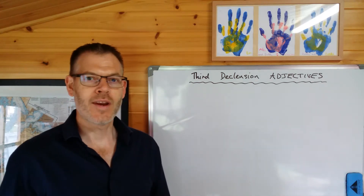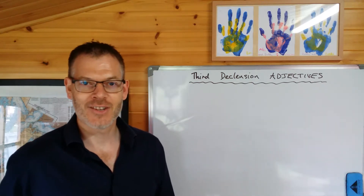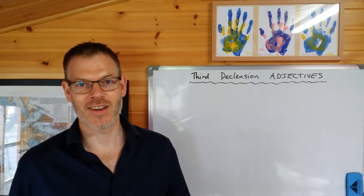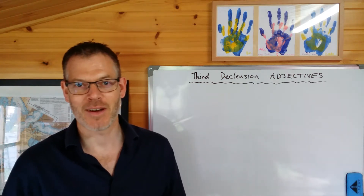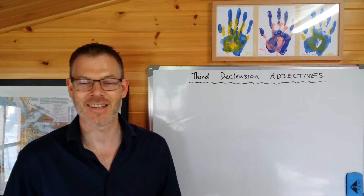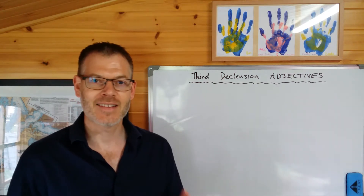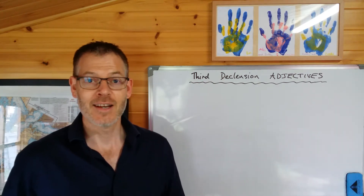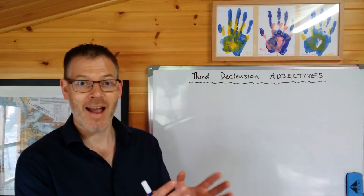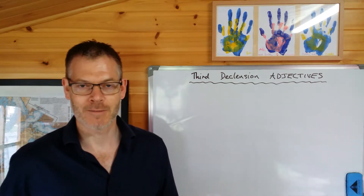We know already that in the third declension, the masculine and feminine forms are the same. Well, that's great news — it slashes by 33% the number of things we need to learn. We're expecting the same thing in the adjective, and indeed that is the case. They follow the same pattern of declension in masculine and feminine forms.